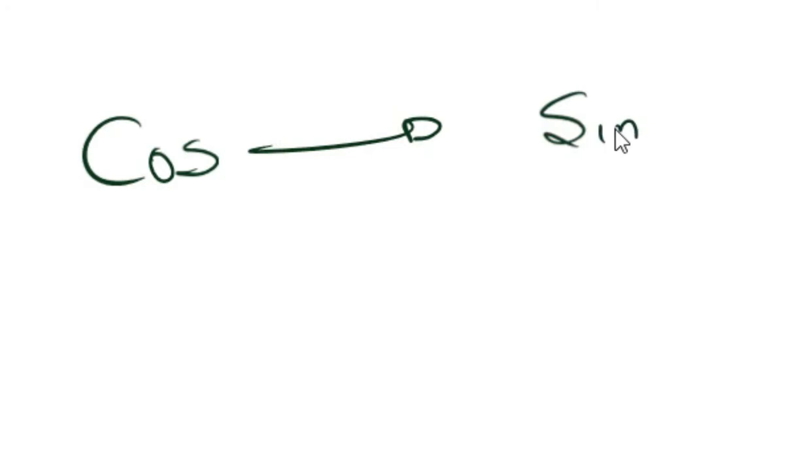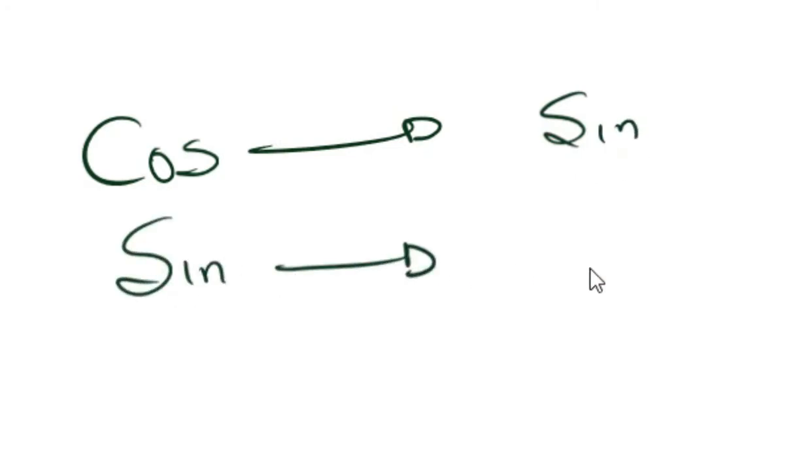In this first section we'll explain the basics. To understand how to use co-functions or co-ratios, it's important to understand complementary angles. The concept involves changing from cosine into sine or from sine into cosine.